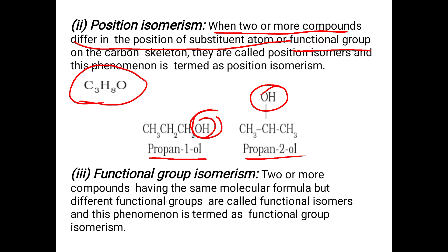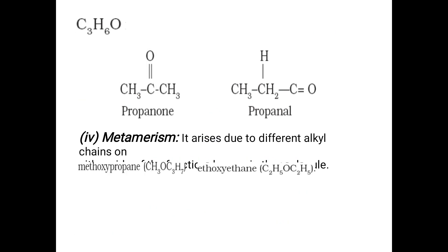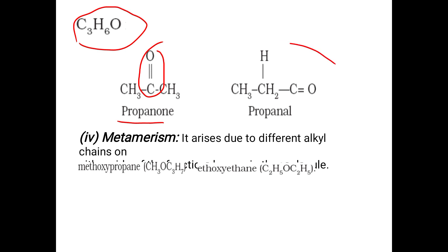Next is functional group isomerism. Two or more compounds having the same molecular formula but different functional groups are called functional isomers, and this phenomenon is termed functional group isomerism. For example, the molecular formula C3H6O: one compound has a ketone functional group (C=O), another has an aldehyde functional group (C=O with H). Both have the same molecular formula but different functional groups, so this is functional group isomerism.